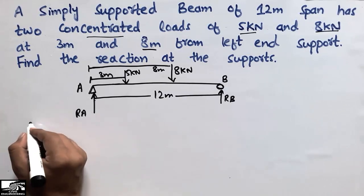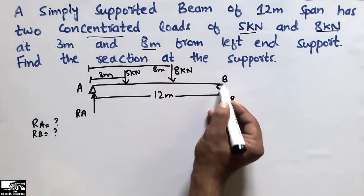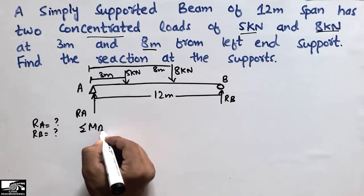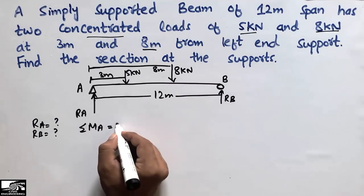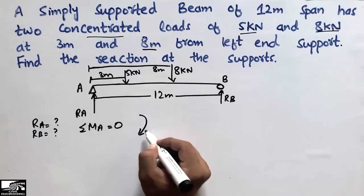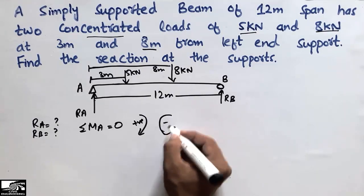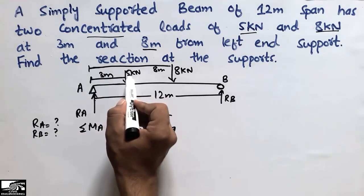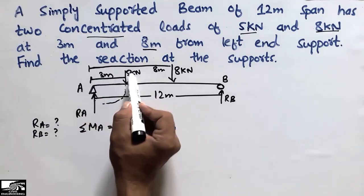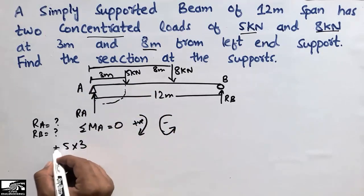To find RA and RB, we apply the condition that the summation of moments at either support is equal to zero. Taking moments at point A, and assuming clockwise direction is positive, the 5 kN load acts clockwise around A with a moment arm of 3 meters, giving 5 × 3 = 15 kN·m (positive).